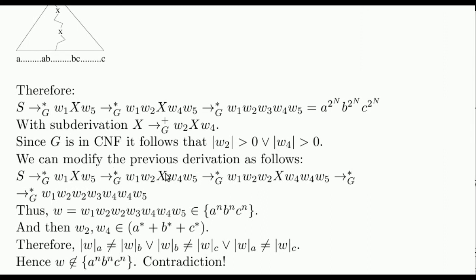On the other hand, we can modify the original derivation from X like this. We have repeated the sub-derivation from X, and so we have this word W. Since it is a terminal word generated from the initial symbol, it must be in the language. It follows that W_2 and W_4, in the case that they are not empty, they must be composed by a single symbol. Else, the sequence W_2 W_2 or the sequence W_4 W_4 would insert As, Bs or Cs in the wrong order and W would not be in the language.